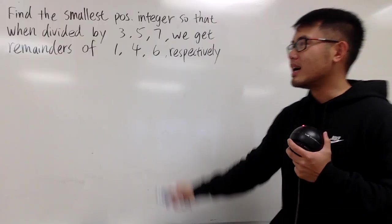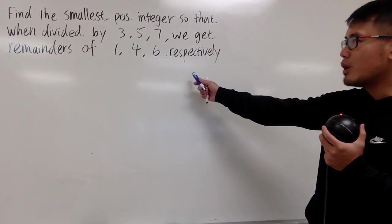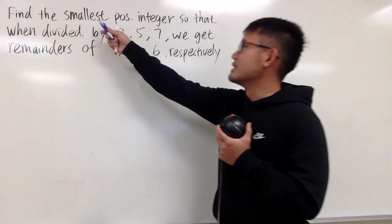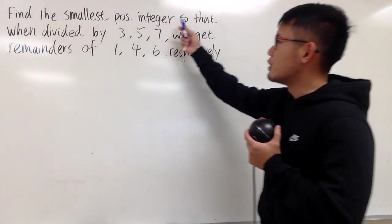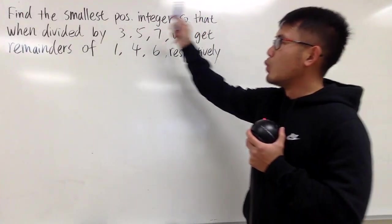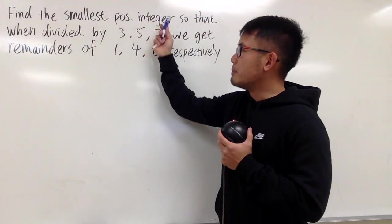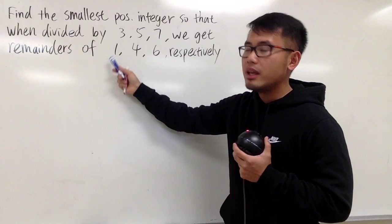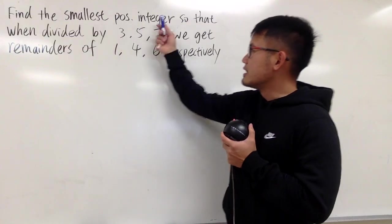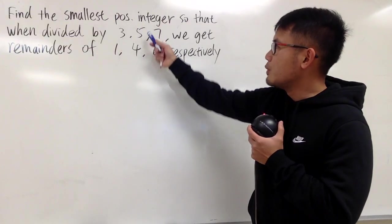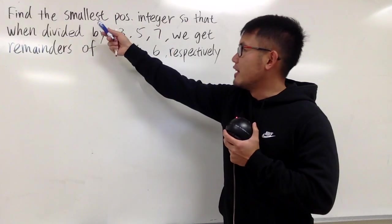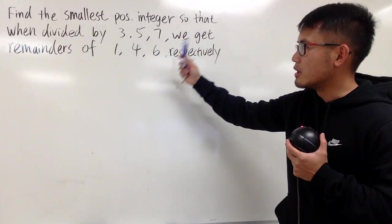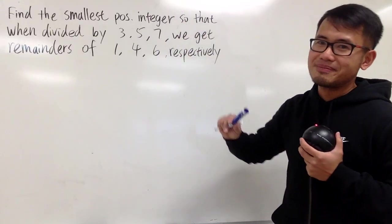Today I'm going to demonstrate how to solve this kind of question. We are going to find the smallest positive integer so that when we divide this number by 3 we get a remainder of 1, when we divide this number by 5 we get a remainder of 4, and when we divide this number by 7 we get a remainder of 6.